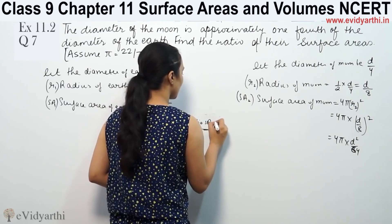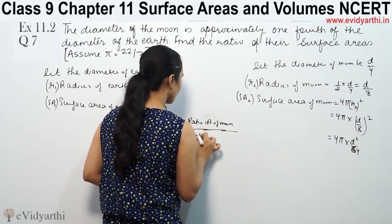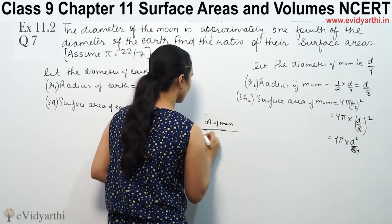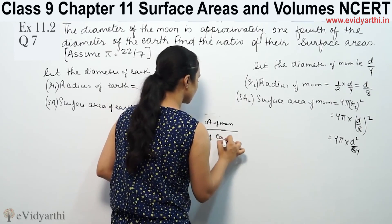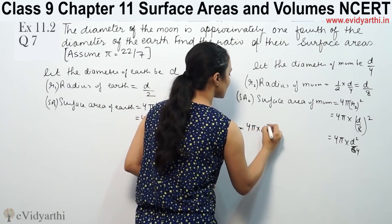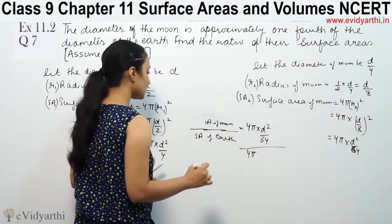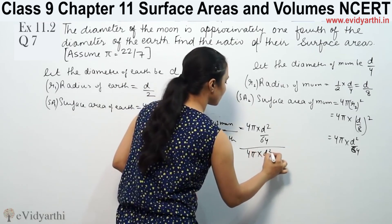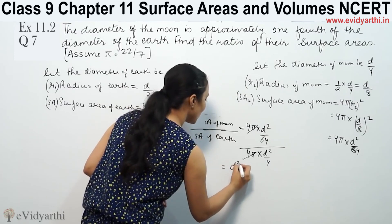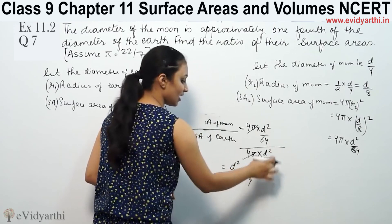The ratio of surface area of moon to surface area of earth is: 4π into D squared by 64, divided by 4π into D squared by 4. The 4π terms cancel. So the ratio becomes D squared by 64 divided by D squared by 4.